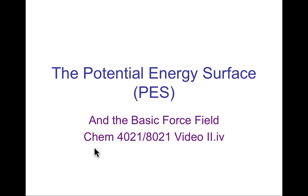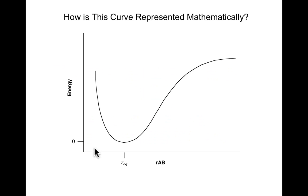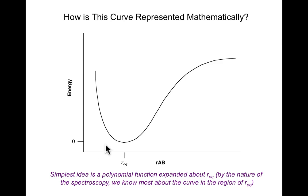Let's pick up where we left off with the last video, exploring how a basic force field constructs analytically a potential energy surface. That's what molecular mechanics really is. I've already illustrated the process of fitting a one-dimensional curve, a bond stretching coordinate, and noted that a simple way to express this kind of curve is to expand a polynomial function about the equilibrium distance, taking advantage of the properties of a Taylor expansion.